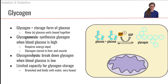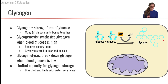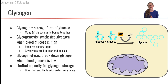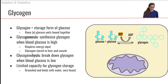We have to invest some ATP in order to bind these glucose molecules together to form glycogen. Now, not all cells in our body can make and store glycogen. Specifically, glycogen is made and stored in our liver and in our muscle.